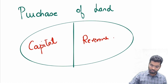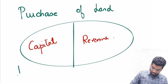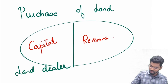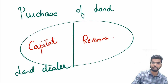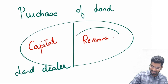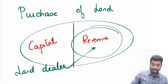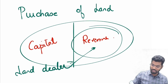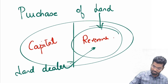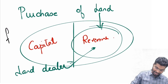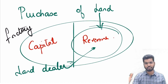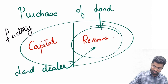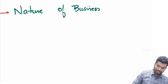Let's say I am a land dealer. What does a land dealer do? He is going to buy and sell the land. When buying and selling land, my primary objective is buying and selling the good — I'm making my money out of buying and selling. I'm not owning land for the purpose of production. So for a person who's a land dealer, purchase of land becomes a revenue expenditure. Whereas if I am actually owning a factory and into manufacturing of particular goods or services, purchase of land becomes a capital item.